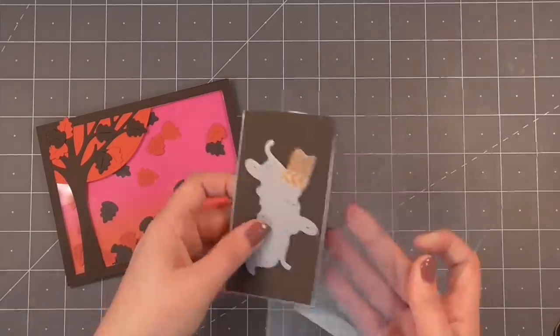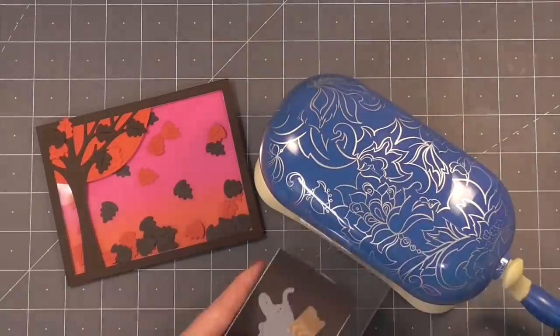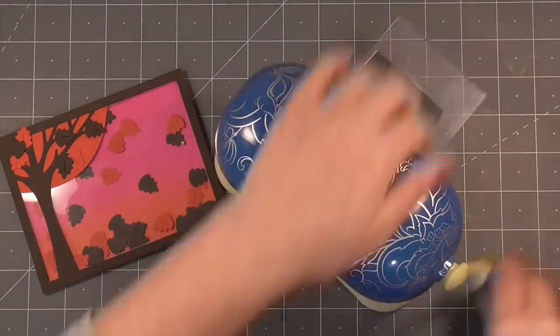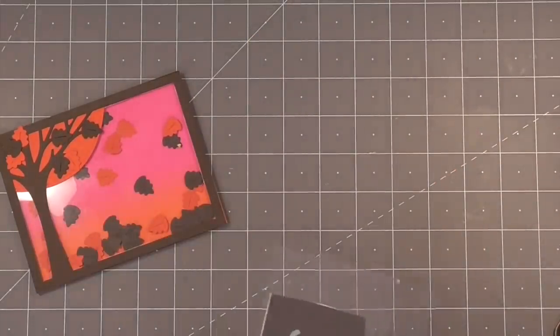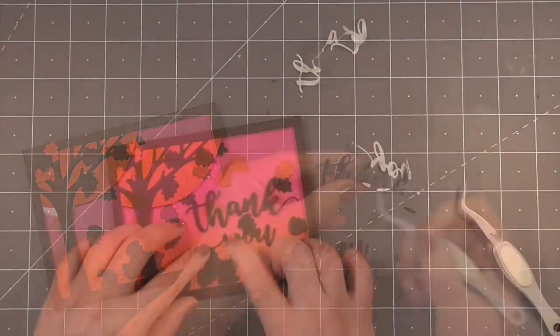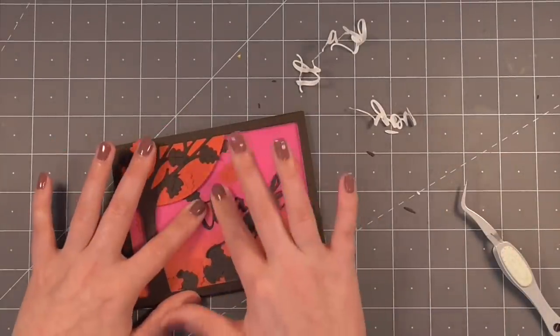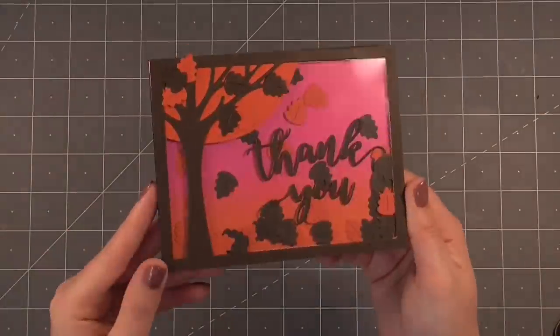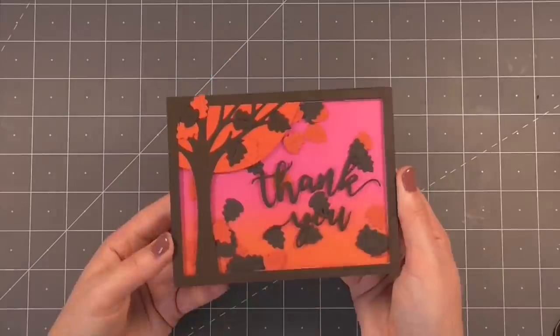To finish this off I grabbed a thank you die from Simon Says Stamp and I'll run that through my die cut machine. I went ahead and added some double-sided sticky tape, some sticker adhesive, onto the back of this cardstock before I die cut it so it would make it really easy to stick down with it being such a small fiddly piece. I'll just go ahead and press that firmly in place and this card is finished.